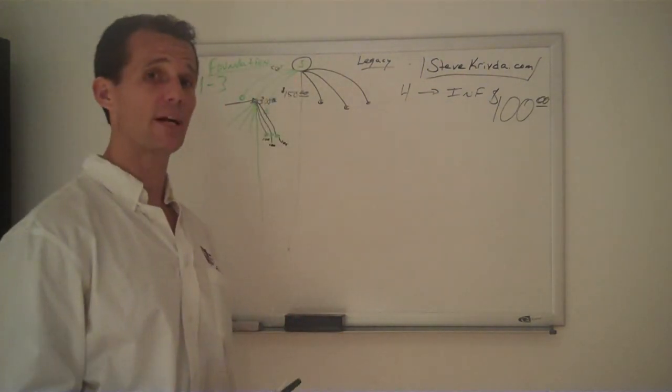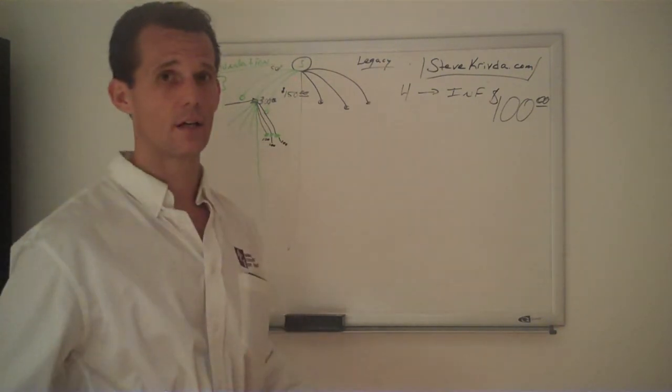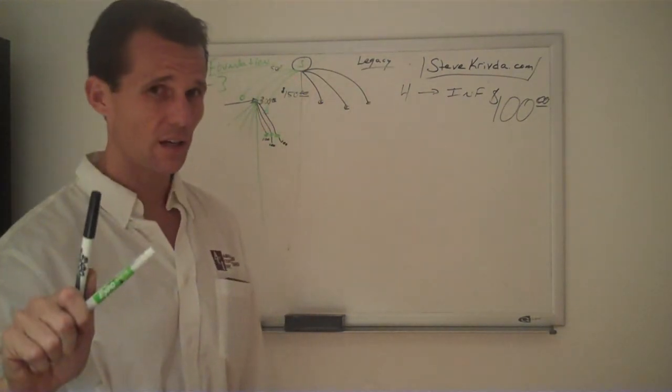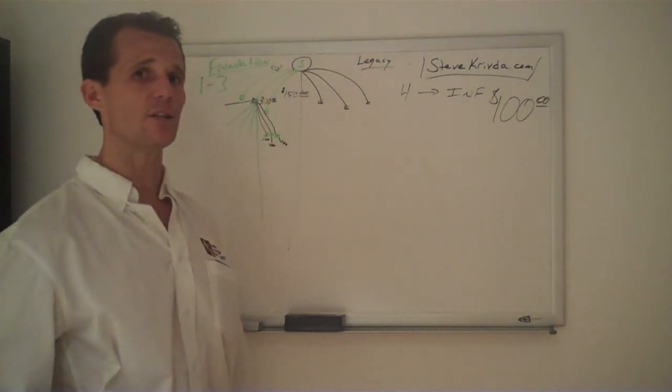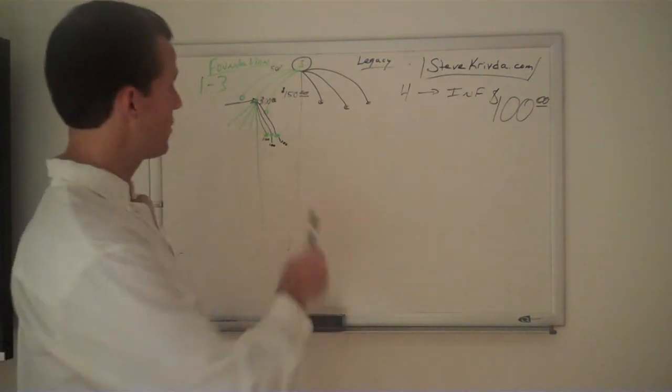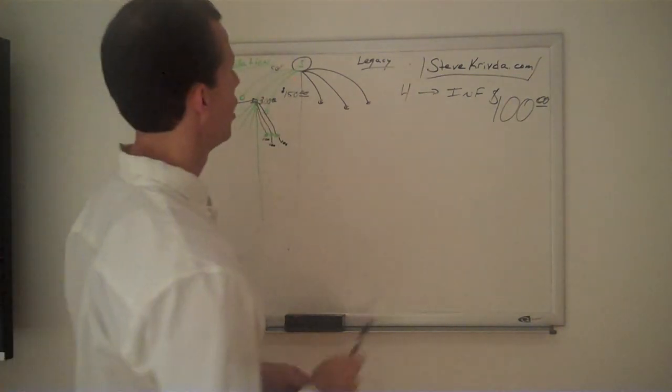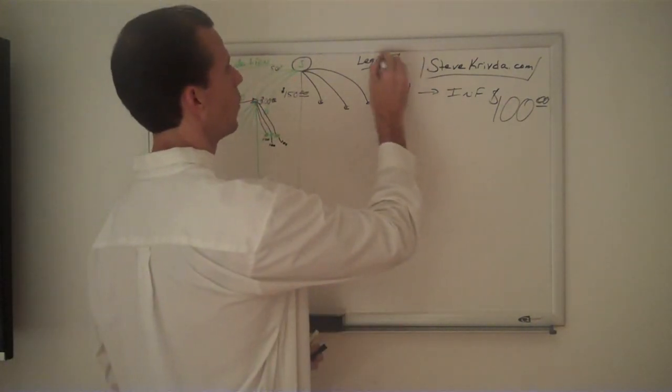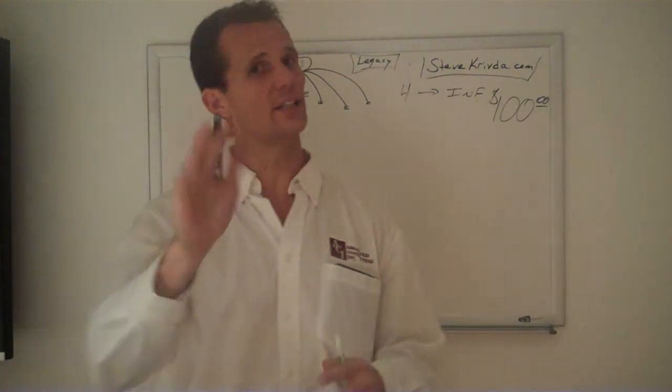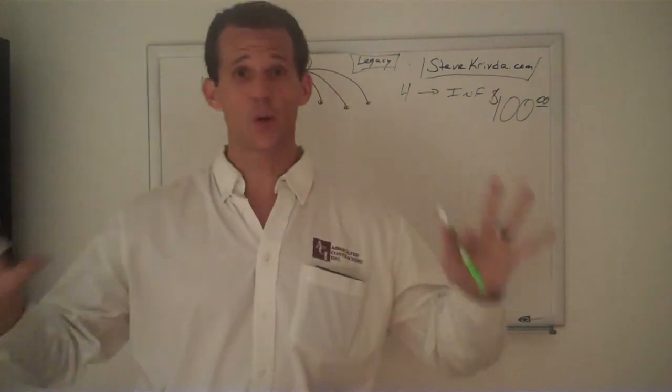So you remember back in those binary plans that we used to have back in the day? That is history. Once you understand this one of twelve ways to make money in Numus Network, it will blow your mind. If you think this foundation, this 50% matching bonus is this strong, wait until you hit legacy. Wait until your legacy, guys. I'm not even going to talk about it. You need to go to the next video, guys, I'm telling you. It's crazy.